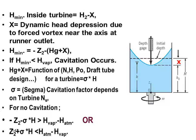For no cavitation, we require that minus z2 minus sigma*H must be greater than h_vapor minus h_atmosphere. Equivalently, z2 plus sigma multiplied by H must be less than h_atmospheric minus h_vapor.